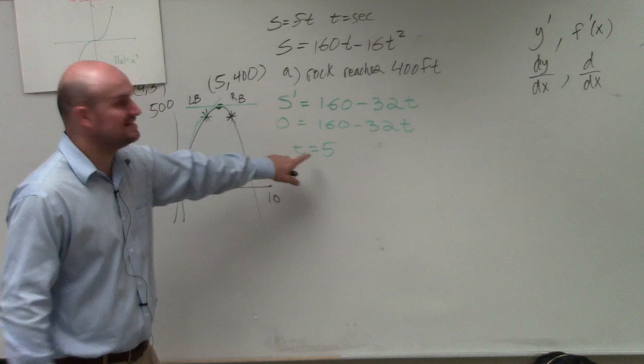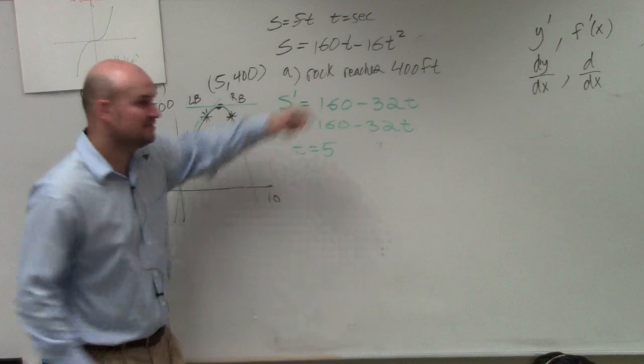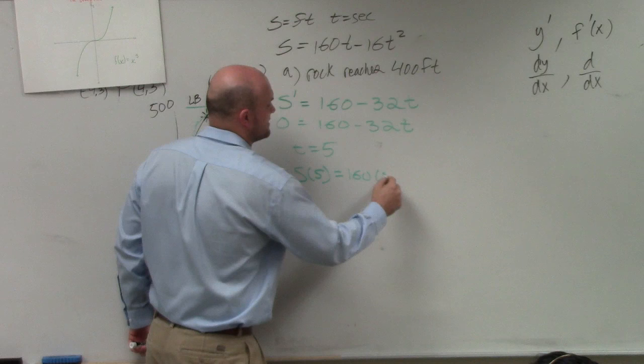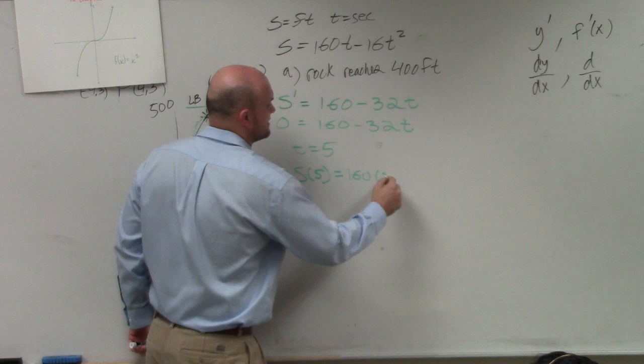Now that I've found how long it takes for the velocity to equal 0, 5 is my value. I plug 5 into my position function. So I do S of 5, and that's 160 times 5 minus 16 times 5 squared. Guess what S of 5 gives me? 400.